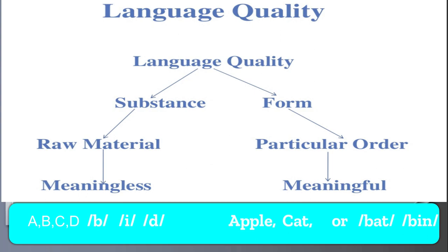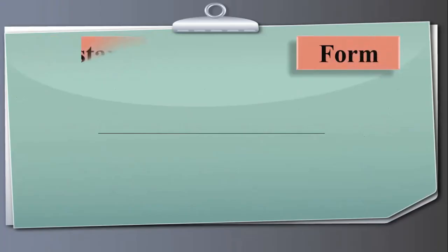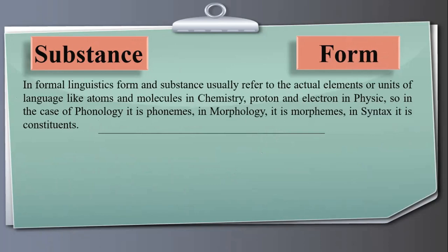In formal linguistics, form and substance usually refer to the actual elements or units of language like atoms and molecules in chemistry, like protons and electrons in physics. In the case of phonology it is phonemes, in morphology it is morphemes, in syntax it is constituents.